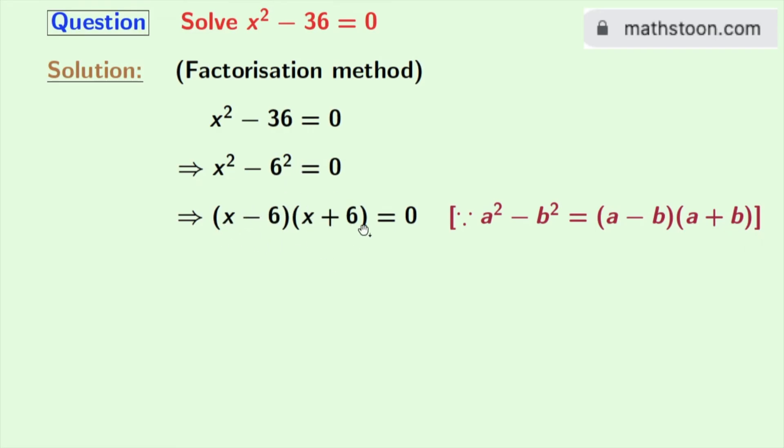Now recall that if the product of two numbers is 0, then the value of either of those numbers individually will be 0. So either x minus 6 is 0 or x plus 6 is 0. If x minus 6 is 0 then x will be 6, and if x plus 6 is 0 then x will be minus 6.